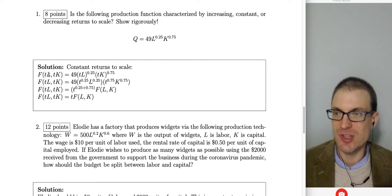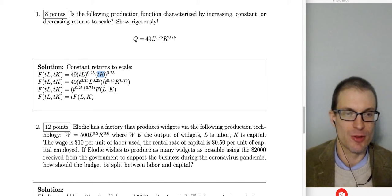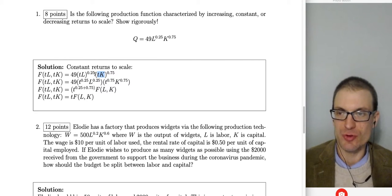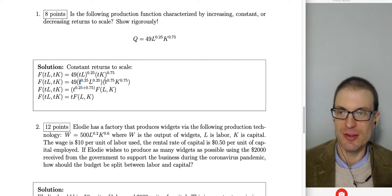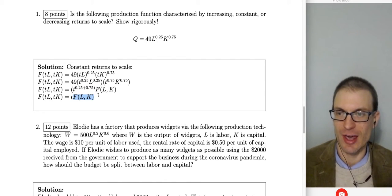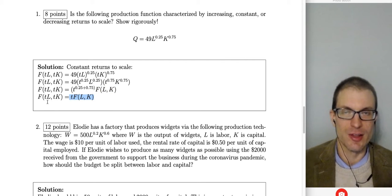We'll evaluate some arbitrary scaling factor T times the amount of labor times the amount of capital. So this is going to be 49(TL) to the 0.25 times (TK) to the 0.75. Applying power rules — a product raised to an exponent distributes to each factor — and using the same-base exponent addition rule, the T exponents sum to one. So we get T times F(L,K), which is constant returns to scale.